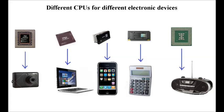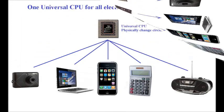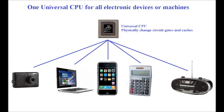For example, a video game console has a special CPU called a GPU to process video and 3D model rendering, while a desktop computer has a different type of CPU to run software like spreadsheets or word processors. If you try to run a video game console on a desktop CPU, the frames will be really slow — in some cases it won't even run. A Universal CPU is one chip that can be used on all electronic devices regardless of size or shape, with the ability to physically change its circuit gates and electronic circuitry during runtime to create an optimal customized chip for any device.